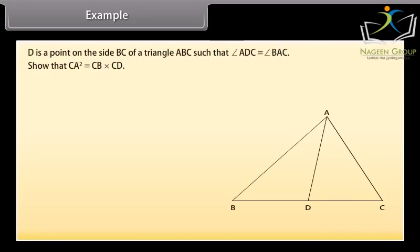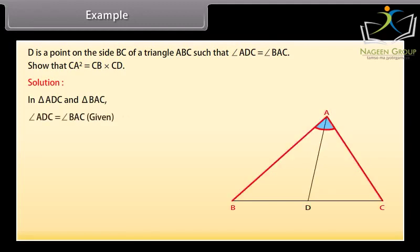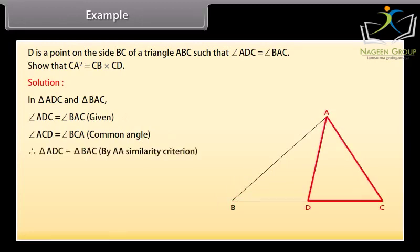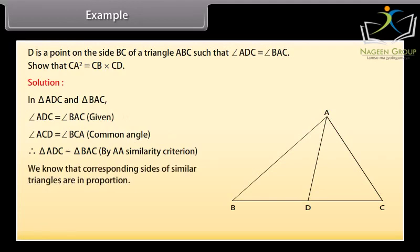D is a point on the side BC of triangle ABC such that angle ADC equals angle BAC. Show that CA² equals CB times CD. Solution: In triangles ADC and BAC, angle ADC equals angle BAC (given) and angle ACD equals angle BCA (common angle). Therefore, triangle ADC is similar to triangle BAC by AA similarity criterion. Since corresponding sides of similar triangles are in proportion, CA upon CB equals CD upon CA, which implies CA² equals CB times CD.